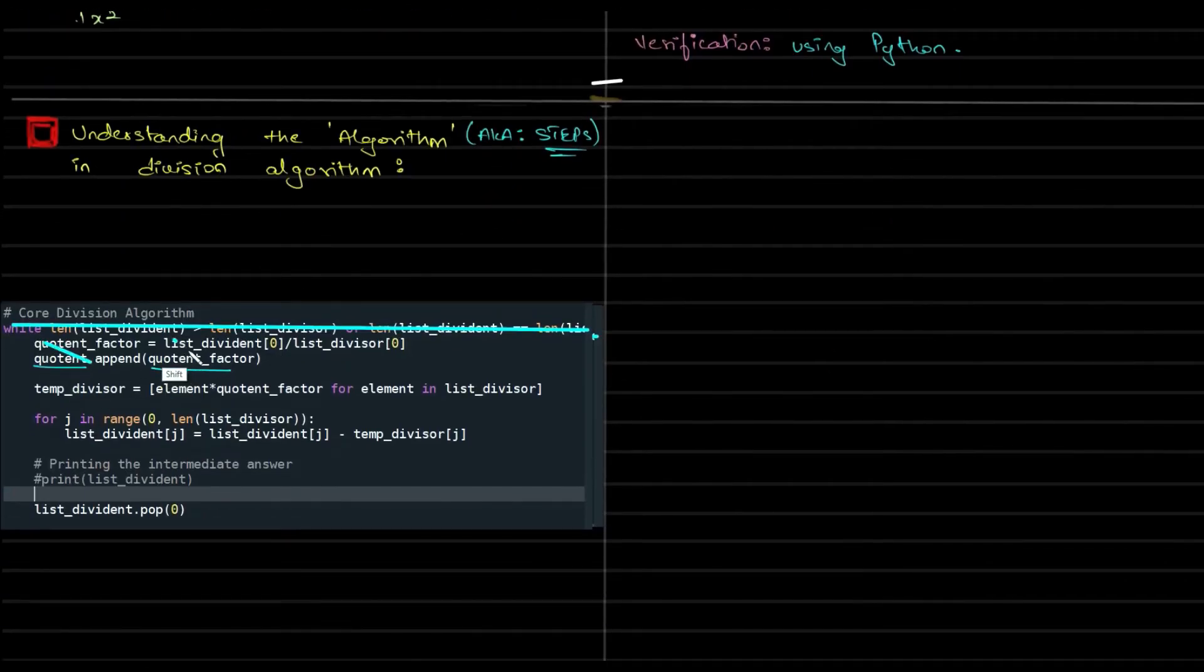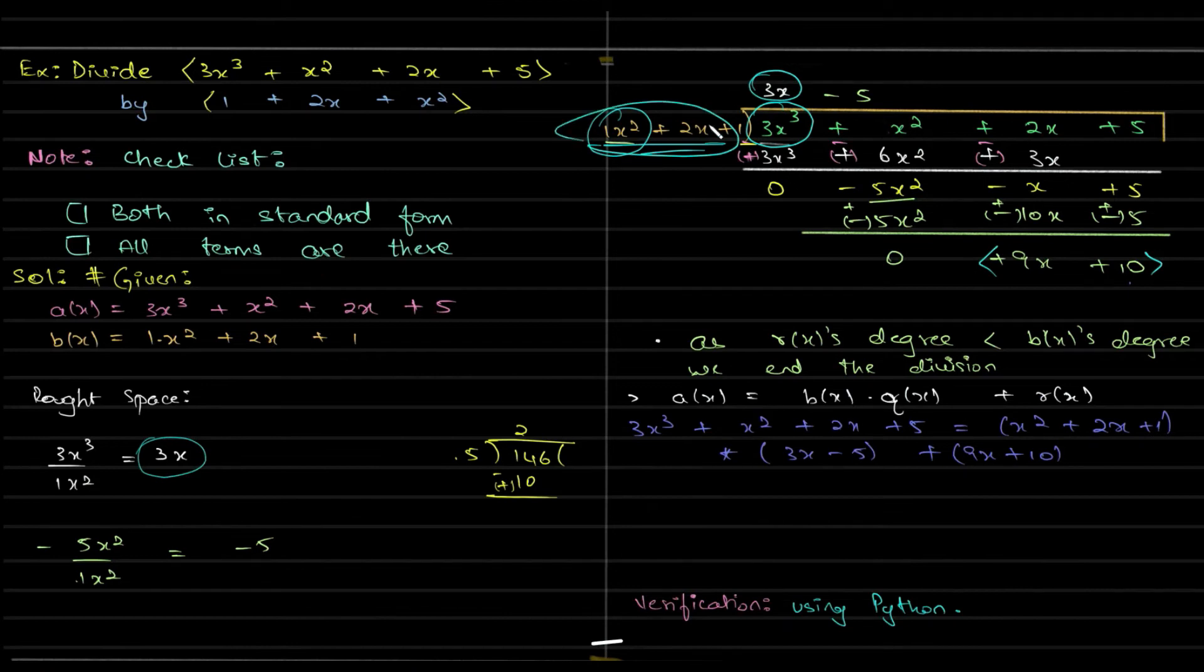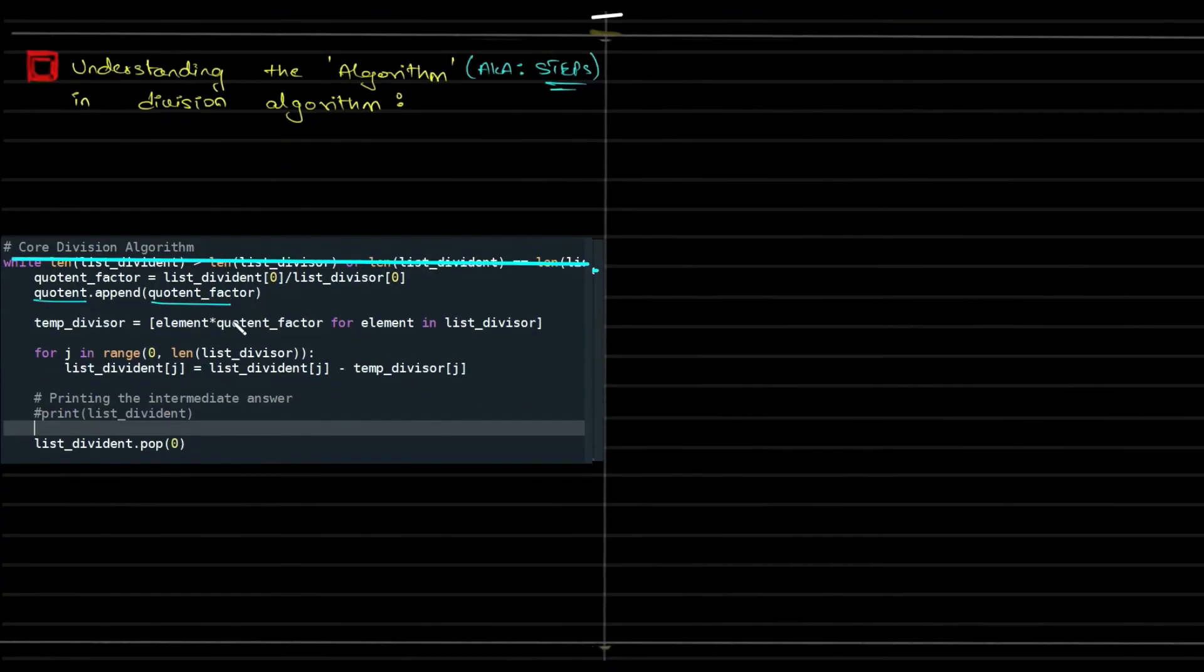Then the next step is, so these two lines done, we just divide it. We took the first term and we divided it. Then our temp divisor is equal to element into quotient factor. What I am trying to do over here is I took this and multiplied with 3x and I have a temporary space allotted for such process. What I am trying to do here is I multiplied the 3x with the divisor. See, each of the element in the divisor is being multiplied with the quotient factor, with that factor we are multiplying. And then we are going through another loop, wherein I am subtracting each term. I am doing the subtraction over here.